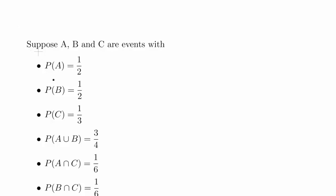In this question we will look at a probability example. Suppose we have three events. Probability of A, B and C are 1 half, 1 half and 1 third. So we have three events A, B, C and those are the probabilities.